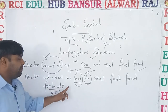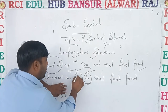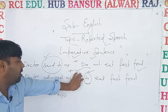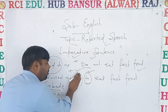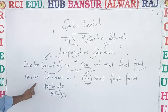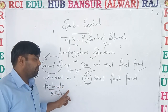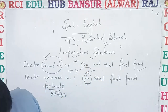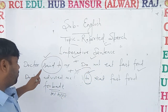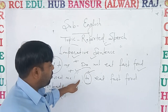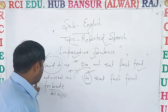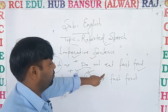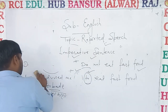Doctor forbade me to eat fast food — that is also correct. If you use 'forbade', then there is no need to use 'not to' — just use 'to'. After 'forbade', no need to write 'not'. So 'doctor forbade me to eat fast food' is correct. But if you are using 'advised', then you have to write 'not to'. Okay?